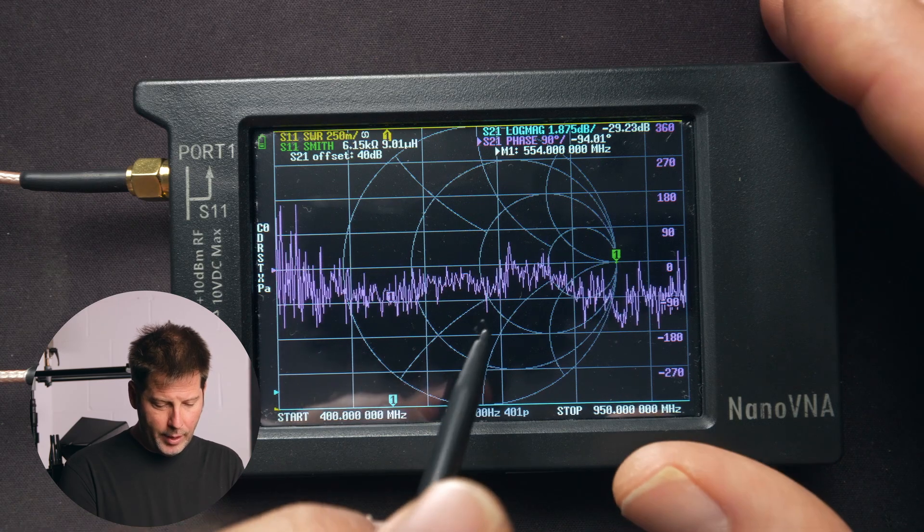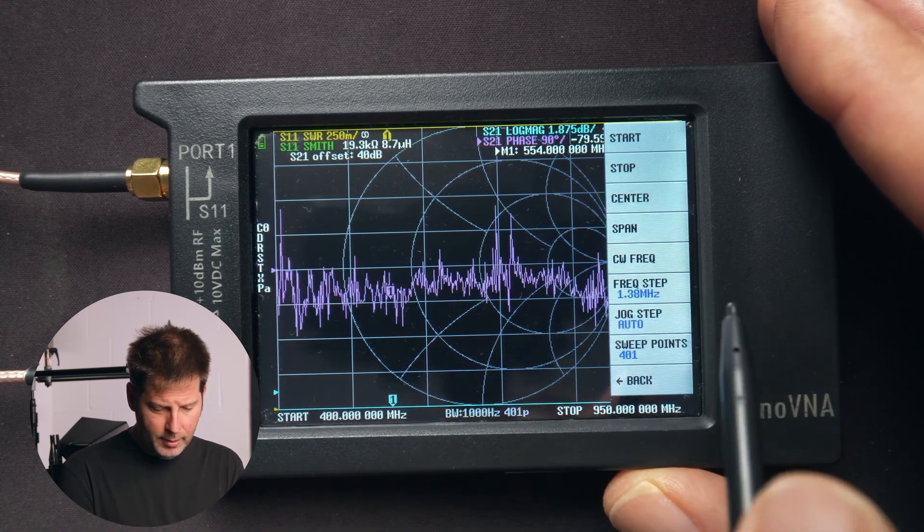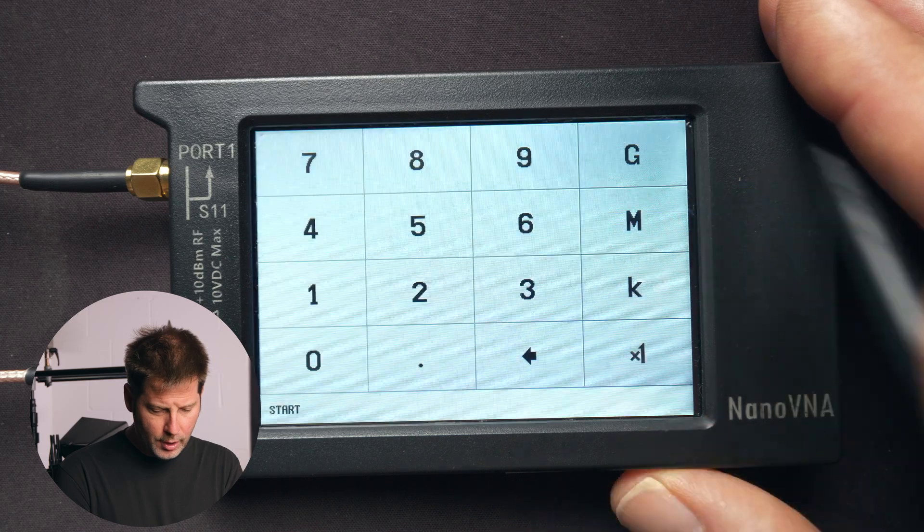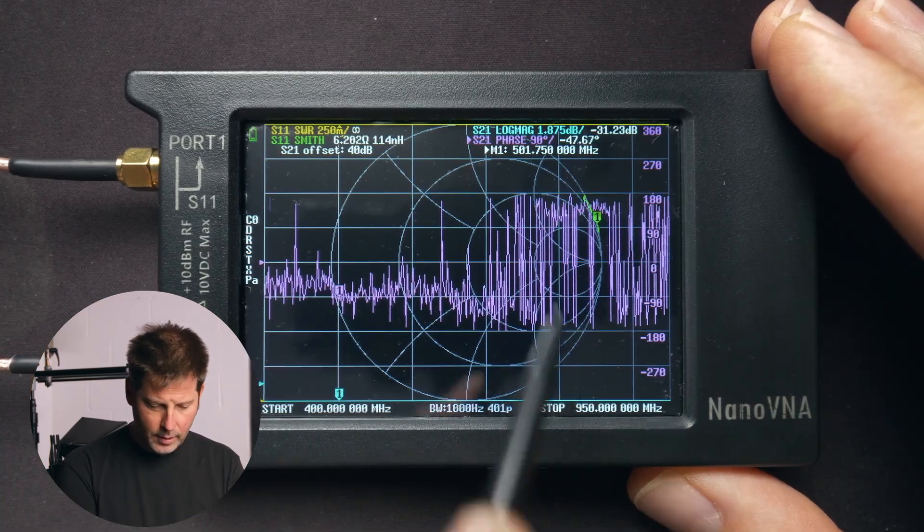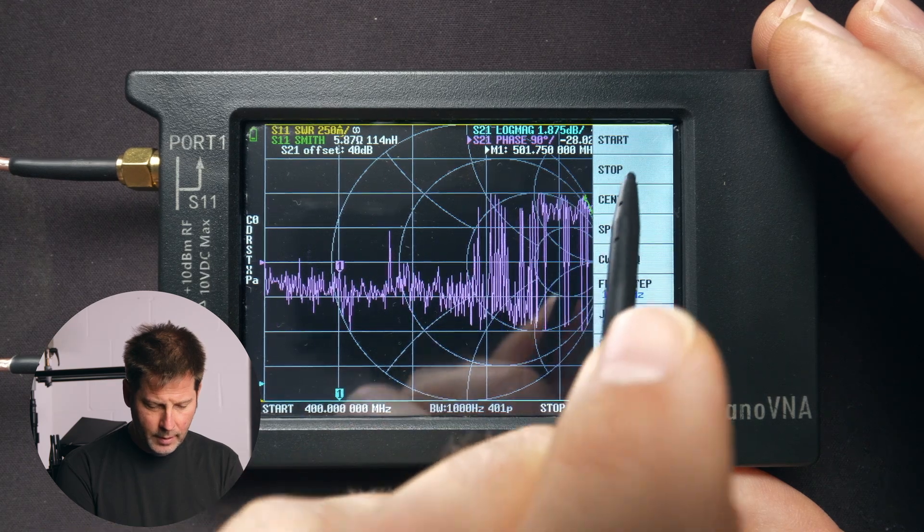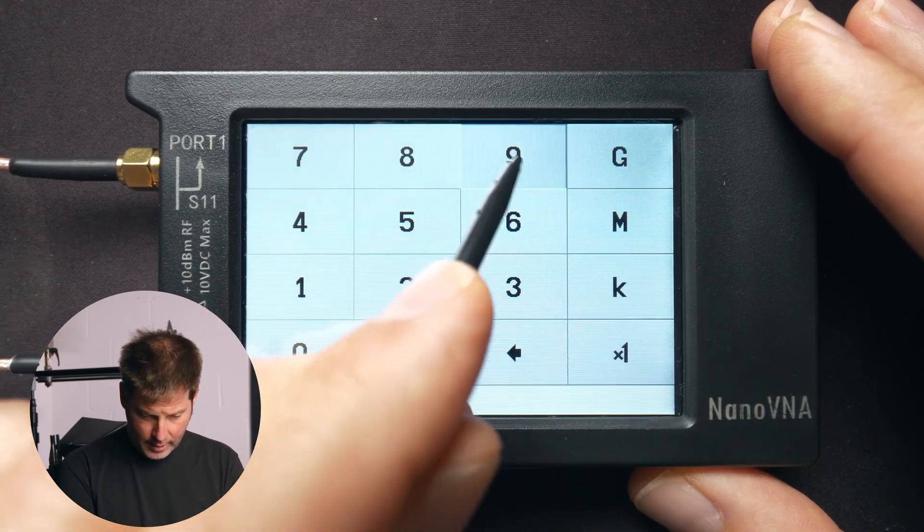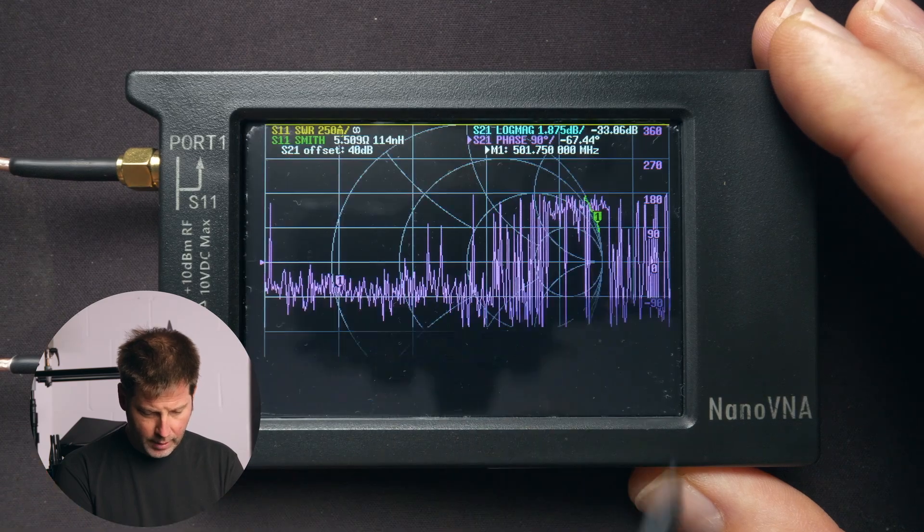To do that, we'll go ahead and press the stylus on the screen, press stimulus, and we'll start, and we're going to enter 400 megahertz. Then we'll press the display again and select our stop as 950 megahertz.